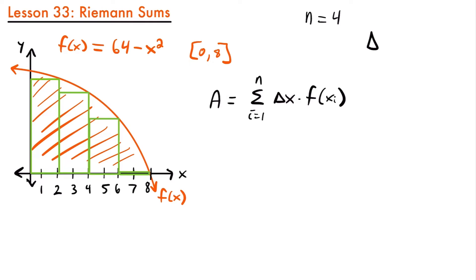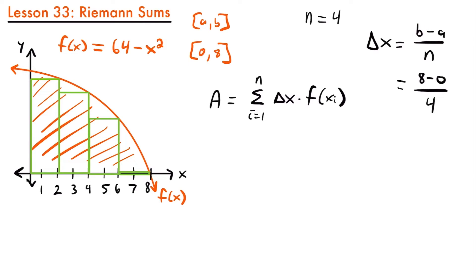For delta x, our width, that's going to be equal to b minus a divided by the number of rectangles, where b and a correspond to the interval. Our interval is from 0 to 8, so delta x equals 8 minus 0 divided by 4, which is equal to 2. The width of each of our rectangles is the same — four equal rectangles to approximate the area from 0 to 8.